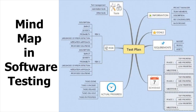Now let's move on to the next slide, which talks about how to use a mind map in software testing. Here is an example: we have a main node which is 'test plan,' and this idea is subdivided into sub-ideas which are schedule, requirements, goal, information, tools, risk, and actual progress.